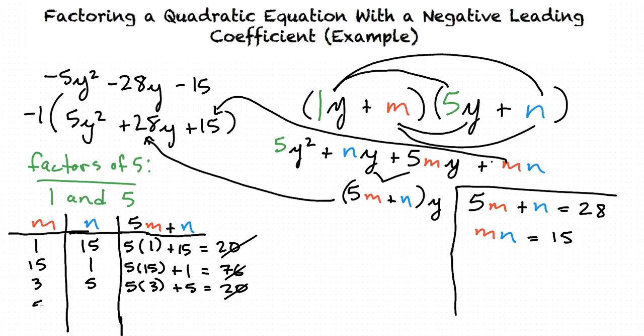Now we can try 5 and 3. We plug in 5 for m, so 5 times 5, and then plus 3 for n. We get 5 times 5 is 25 plus 3 equals 28. This matches what we're looking for. We have 5m + n = 28 and we have 5 times 3 = 15. Therefore, m = 5 and n = 3.